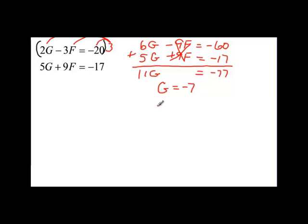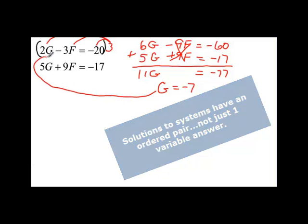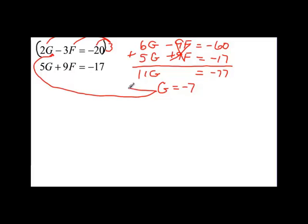Now this is only part of the answer. Remember, it's an ordered pair that solves the system of equations. So we know what g is, but we don't know what f is. We have to plug g into either the top equation or the bottom equation — it doesn't matter which one. We could do both and we'd find the same value for f. I'm going to take the top equation because they're smaller numbers and it'll make it easier to solve. So I come in and I write 2, then put in g, which I now know is negative 7, and then write the rest of the problem.